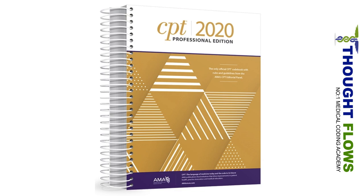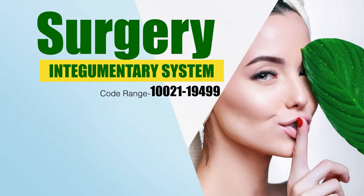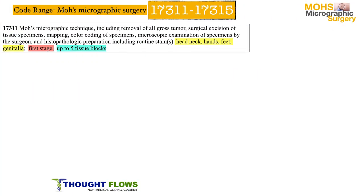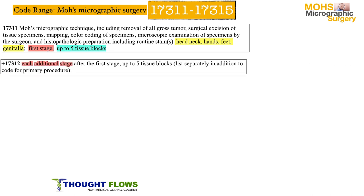We can expect one question from this topic. For code 17311, this code is used for the location head, neck, hands, feet, and genitalia for the first stage, and includes up to five tissue blocks. If the doctor performs an extra stage, we use code 17312 for each additional stage after the first stage, and this also includes up to five tissue blocks.